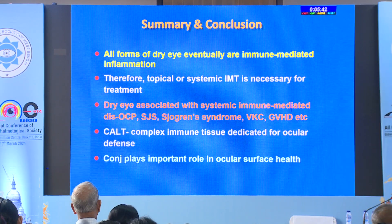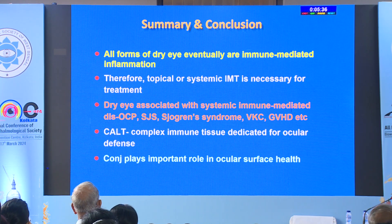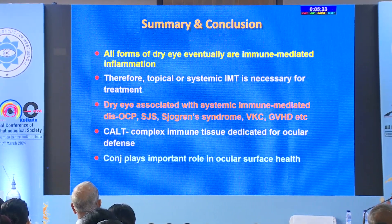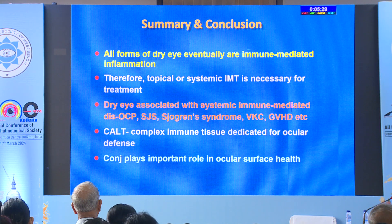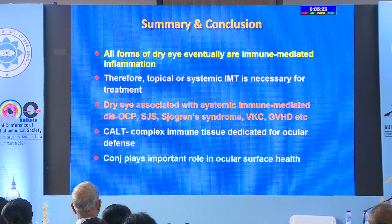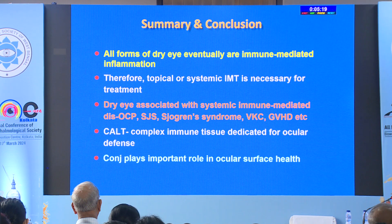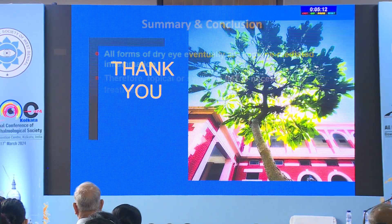In summary, all forms of dry eye eventually are immune-mediated — that is the one thing to remember regardless of the type. Therefore, topical or systemic immunosuppressives are necessary depending on whether there is systemic involvement. Dry eye associated with systemic immune-mediated diseases like OCP, Stevens-Johnson, Sjogren's, VKC, and GVHD cannot be treated with topical treatment only — systemic treatment is needed.